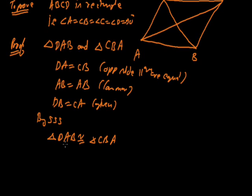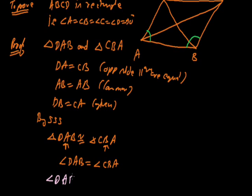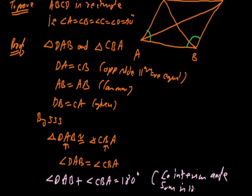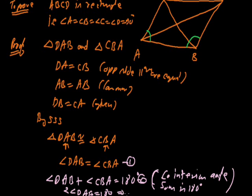From this we can say angle DAB equals angle CBA by CPCT. But DAB plus CBA should equal 180 degrees because they are co-interior angles. Since both angles are equal and their sum is 180 degrees, twice of angle DAB equals 180, which implies angle DAB equals 90 degrees. Therefore ABCD is a rectangle.